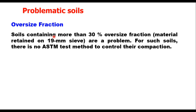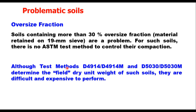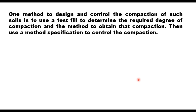This test is not suitable for certain problematic soils. The first is when you have an oversize fraction — soils containing more than 30% material retained on the 19 mm sieve. For such soils there is no ASTM test method to control their compaction, although ASTM D4914 and D5030 prescribe methods to determine field dry unit weight, but they are difficult and expensive. One method is to use a test fill to determine the required degree of compaction and then use a method specification to control field compaction.